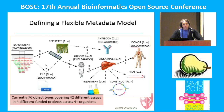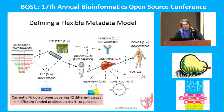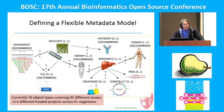We knew we needed to model certain areas of genomics data — for example, experiments, libraries, files, biosamples, and different types of biosamples. We handle cell lines, primary cells, immortalized cells, and tissue slices.